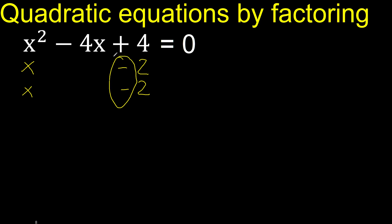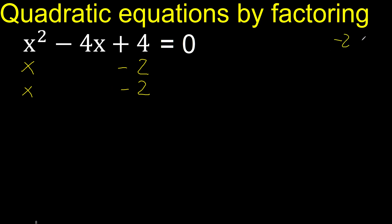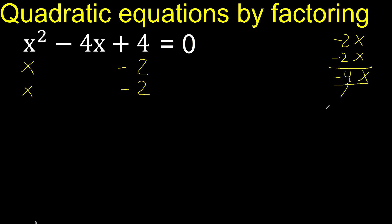Let's try and verify if it is correct. x multiplied by minus 2: here, minus 2 minus 2 is minus 4. Therefore it is correct.